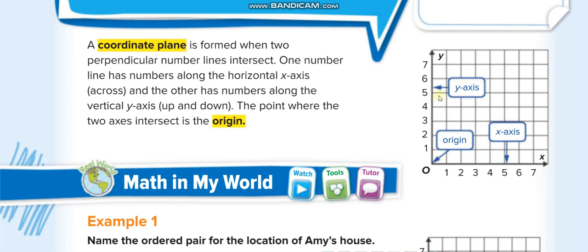In this lesson, we will use grid papers. A coordinate plane is formed when two perpendicular number lines intersect. One number line has numbers along the horizontal X-axis.